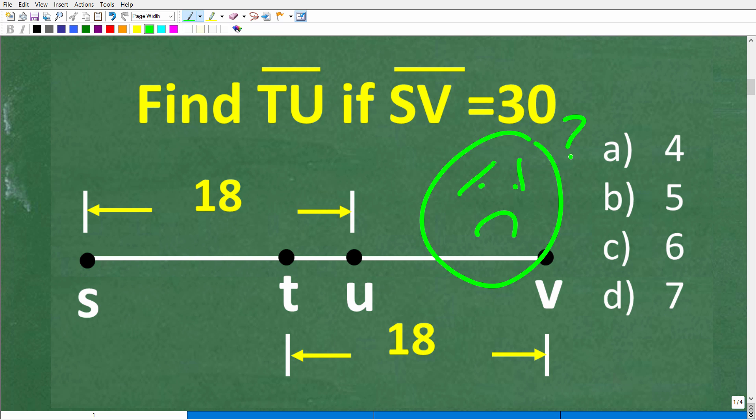You have one out of a four chance. You have a 25% chance of getting this right. So maybe you're like, well, this looks kind of small. Maybe it's four. Well, listen, that's a great guess. Unfortunately, it's wrong. But nevertheless, at least you took a chance. So how are we going to figure this out?